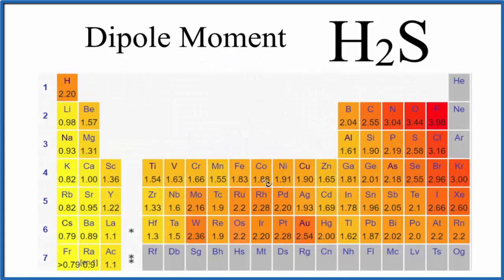So we have a periodic table here with electronegativity values written in. Here's hydrogen right here, and here is sulfur. So 2.20, 2.58, there's a difference of 0.38. So we do have a difference in electronegativity.